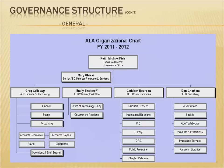ALA also has an advantageous financial position because we've been able to invest some of our funds. Some of these funds are restricted when we receive them from the outside and we invest them in bonds and stocks. Other gifts that we receive are unrestricted and can support the general work of the organization. We have basically structured our long-term investments into an endowment-like organization, run by a group of endowment trustees that works with a financial advisor to make sure the funds are well-managed and produce revenue that supports the work of the organization.